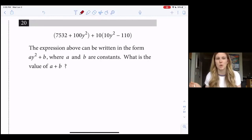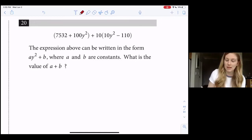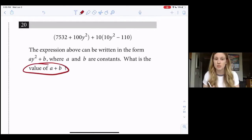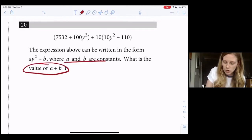So we're given this expression: 7532 + 100y² + 10(10y² - 110). And then it says the expression above can be written in the form ay² + b, where a and b are constants. What is the value of a + b? So I circle the question - I'm looking for a + b.